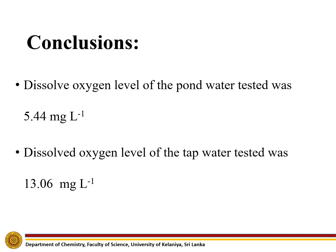The conclusions obtained from this experiment are that the dissolved oxygen level of the pond water tested was 5.44 mg per litre, and that the dissolved oxygen level of the tap water tested was 13.06 mg per litre.